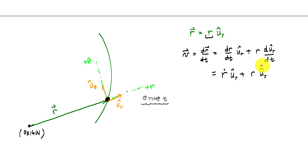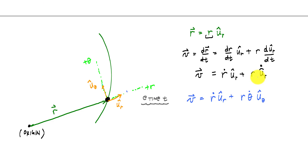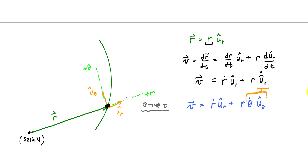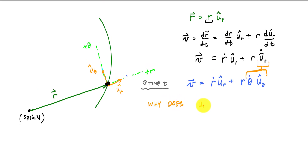You can already see the form of the equation. The final form of the velocity vector was r_dot u_r_hat plus r*theta_dot u_theta_hat. So the question is: how do we go from u_r_dot to theta_dot u_theta_hat? Why does u_r_dot equal theta_dot u_theta_hat?